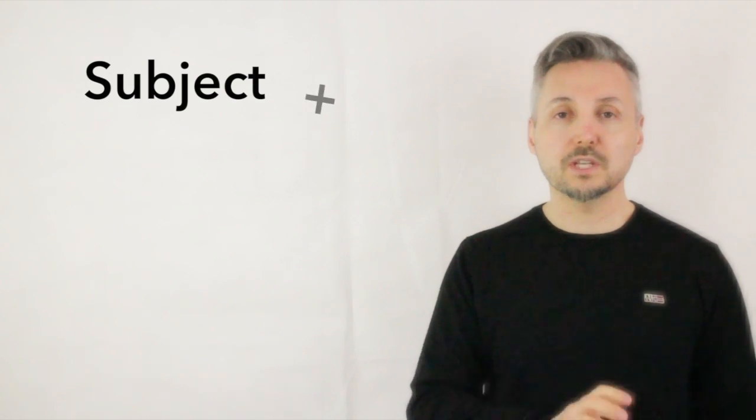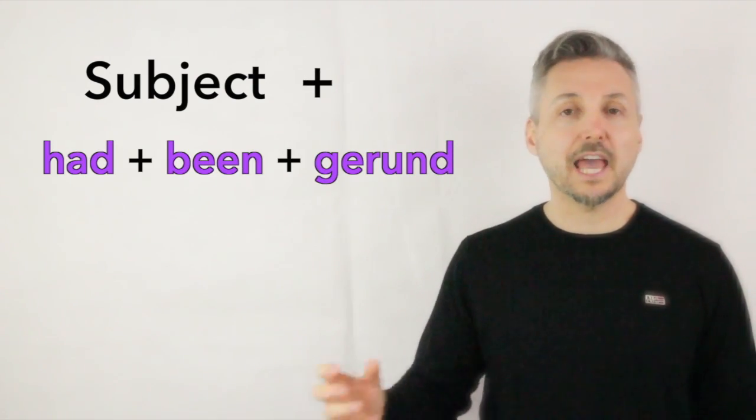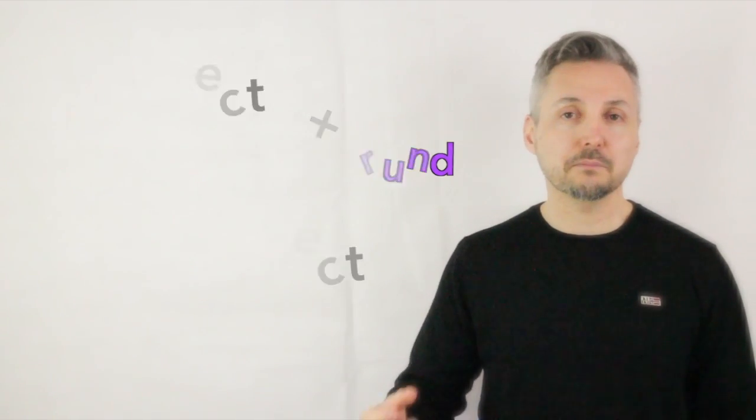E viene introdotto anche delle parole come since, before nella stessa frase. Usiamo il soggetto più l'ausiliare had più been più gerundio. E poi il complemento oggetto per una frase al past perfect continuous.